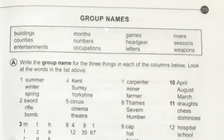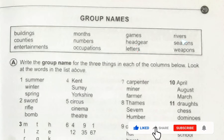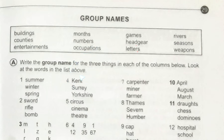Hello friends, hope you're fine. Today I'm going to discuss Junior English Book 3, page number 29, and today's topic is group names. There are some names like buildings, counties, entertainments, months, numbers, occupations, games, headgear, letters, rivers, seasons, and weapons. After getting these names, there are some exercises below and we have to answer those. The first exercise says: write the group name for the three things in each of the columns below.